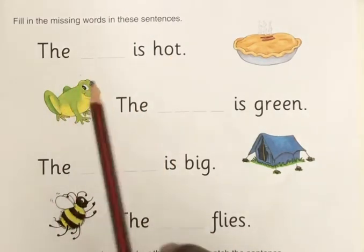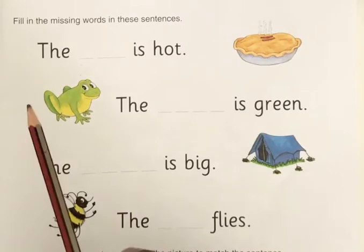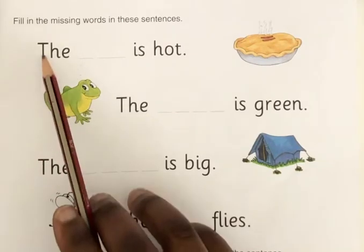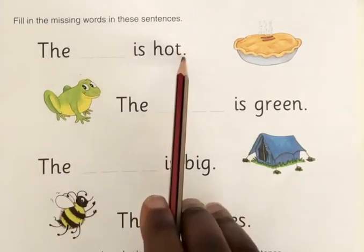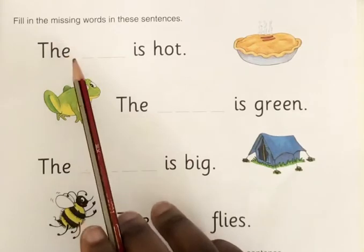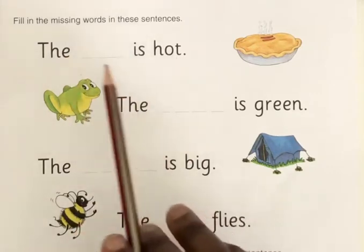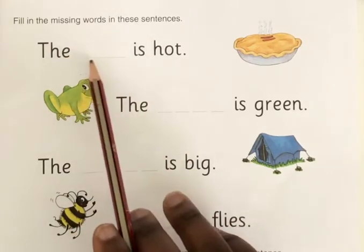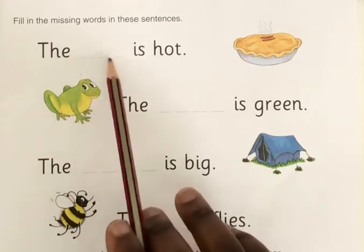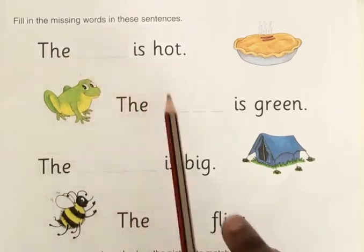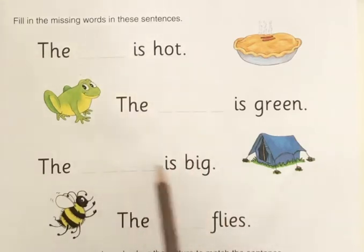When writing a sentence, we have to begin with a capital letter and end with a full stop. In this sentence, there are missing words — you can see some blank spaces in the sentence.